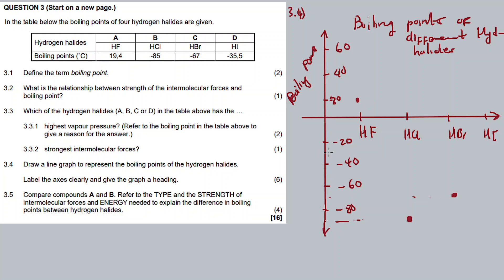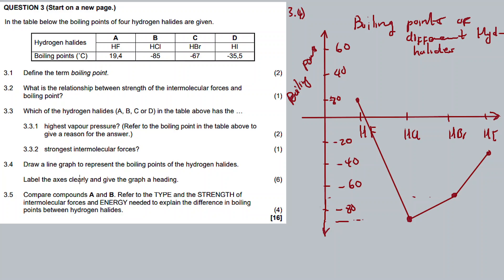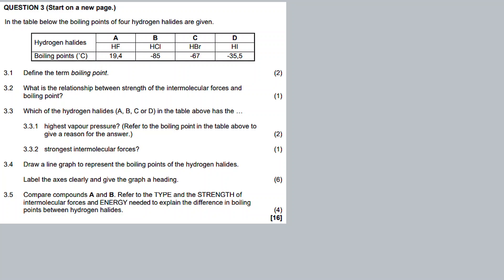Hydrogen chloride is at negative 85. Hydrogen bromide is at negative 67, which is closer to 70. Hydrogen iodide is at negative 35. Now connect the points. Label the x-axis clearly as 'Hydrogen Halides' and the y-axis as 'Boiling Points'. Done.